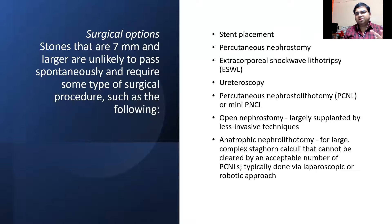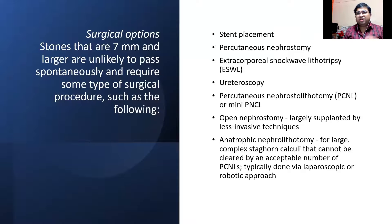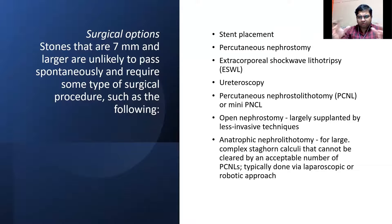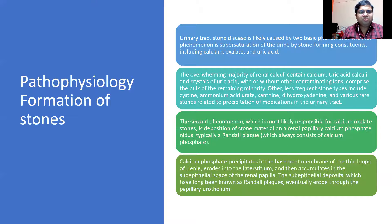For surgical options: in an emergency, stent placement or percutaneous nephrostomy is performed. Elective options include extracorporeal shock wave lithotripsy (ESWL), ureteroscopy, and PCNL. For large, very hard, or staghorn stones — those involving the whole kidney — open anatrophic nephrolithotomy is performed by bivalving the kidney through Brodel's avascular line, controlling the renal artery and vein, and using ice packs for cold ischemia to minimize bleeding.